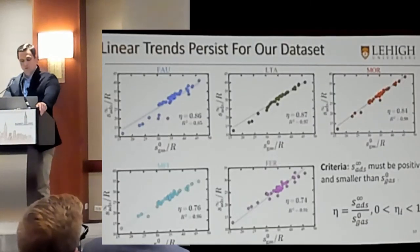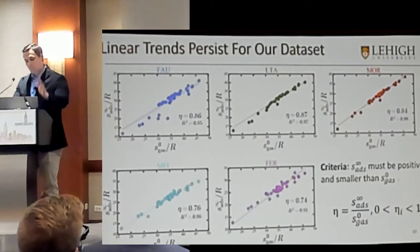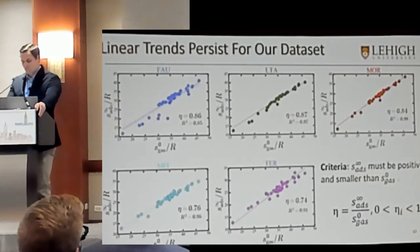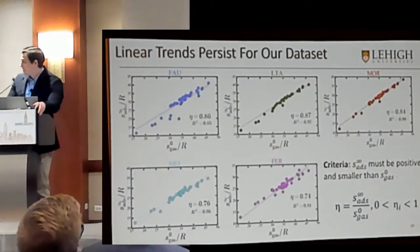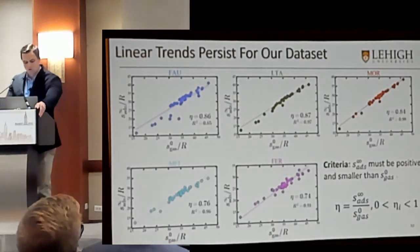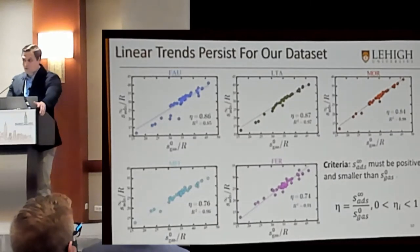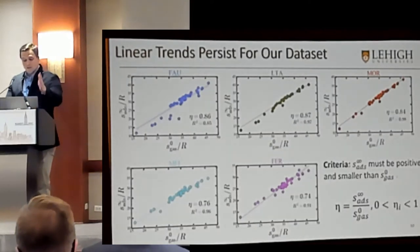Here are some results from these simulations. We were able to reproduce these trends. We may not have reached chemical accuracy, but we have reached a qualitative trend. Just like in the other two papers, we plotted these data points where the y-axis is the absolute entropy of the adsorbate and the x-axis is its respective gas phase entropy. We performed linear least squares regressions with the slopes represented by eta. As you can see, as we move down from faujasite all the way to MFI and ferrierite, these slopes decrease.